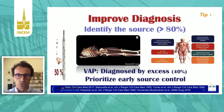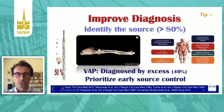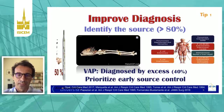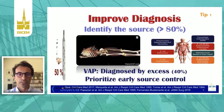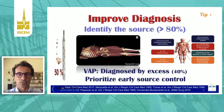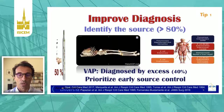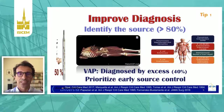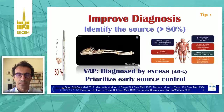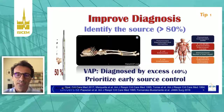As soon as you have the source identification, you will know the type of bacteria you have to target. Always keep in mind that VAP — ventilator-associated pneumonia — is diagnosed by excess in 40% of patients, and that we have to prioritize early source control. Identifying the source is the key to treatment and to good antimicrobial stewardship.